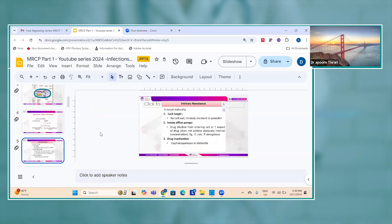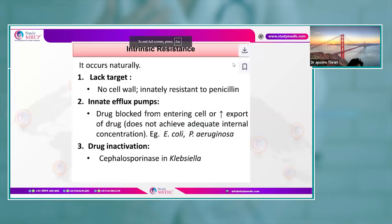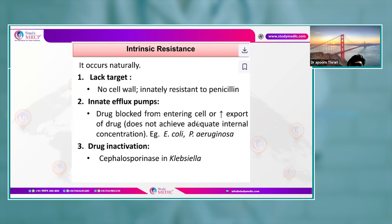Vancomycin-resistant organisms include Enterococcus faecalis and Enterococcus faecium. The drug of choice for MRSA is usually linezolid, but you should know other options: daptomycin, dalfopristin-quinupristin, and teicoplanin. For MRSA, vancomycin and teicoplanin are active antibiotics. Doxycycline and amoxicillin-clavulanate can also act on certain strains of methicillin-sensitive Staphylococcus aureus.